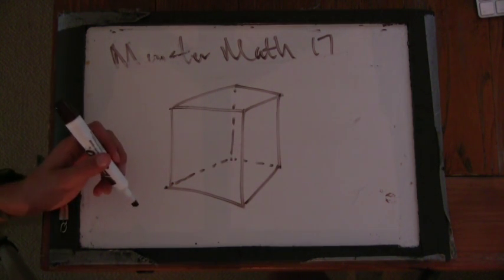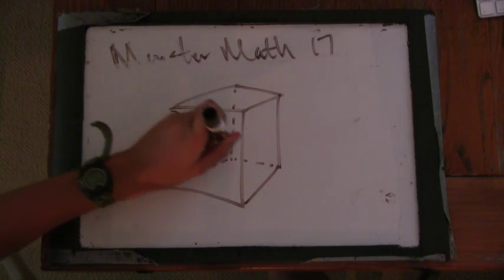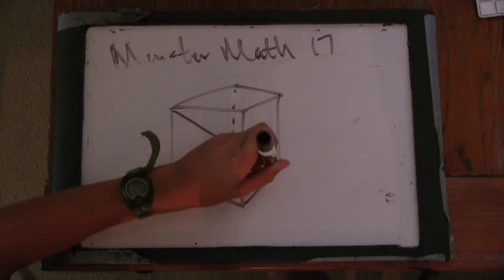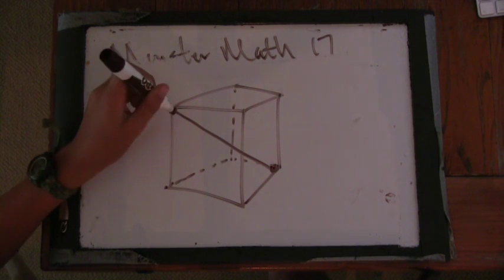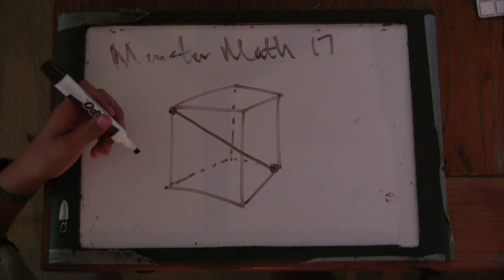So here's a cube. We have space diagonals from here up to here. Okay, so how could we describe that better than just saying it goes from here to here?